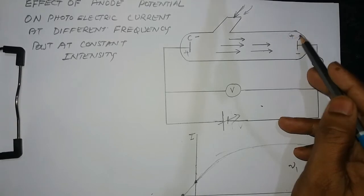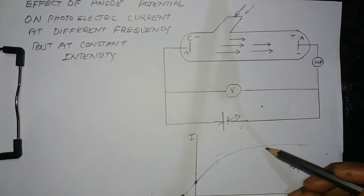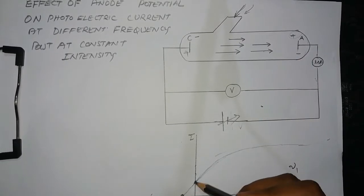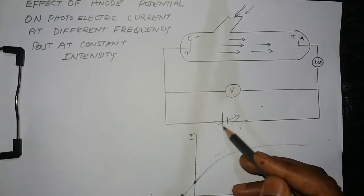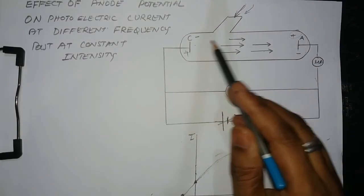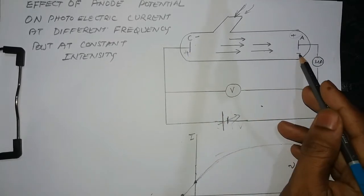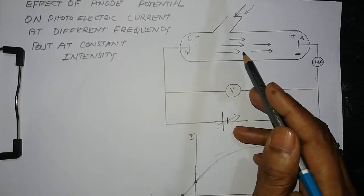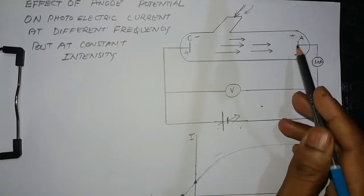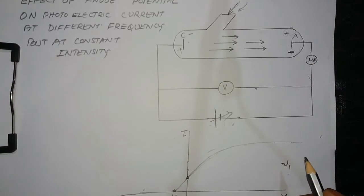When the polarity was positive, the electrons were attracted towards anode A and the current increased. But when the polarity of the cell is changed, retarding forces act on the photoelectrons — they cannot reach the anode — and the photoelectric current becomes zero.